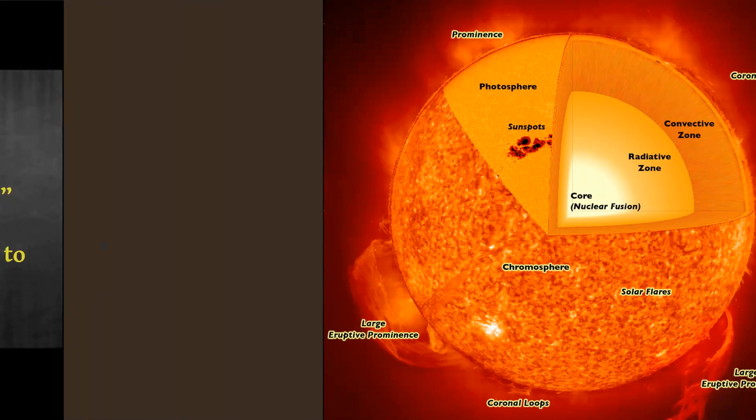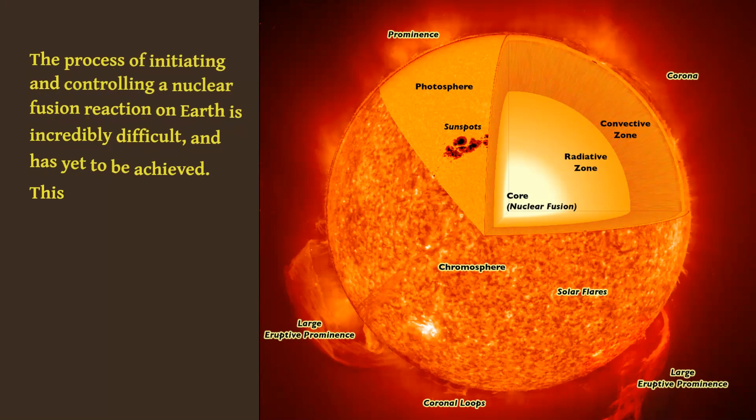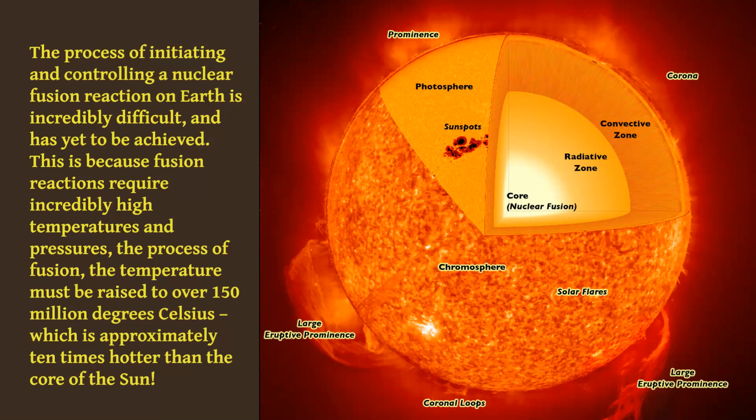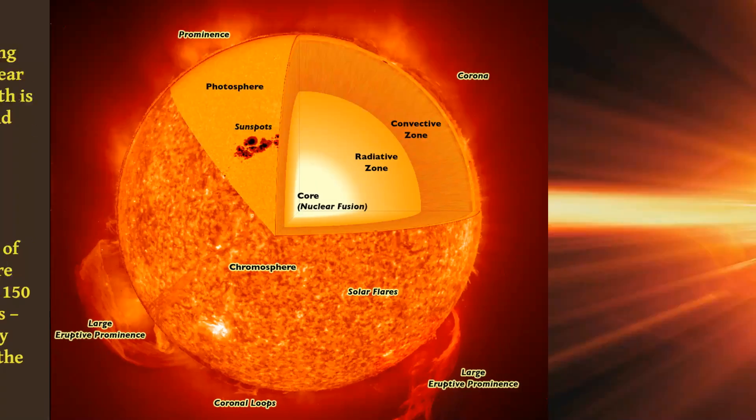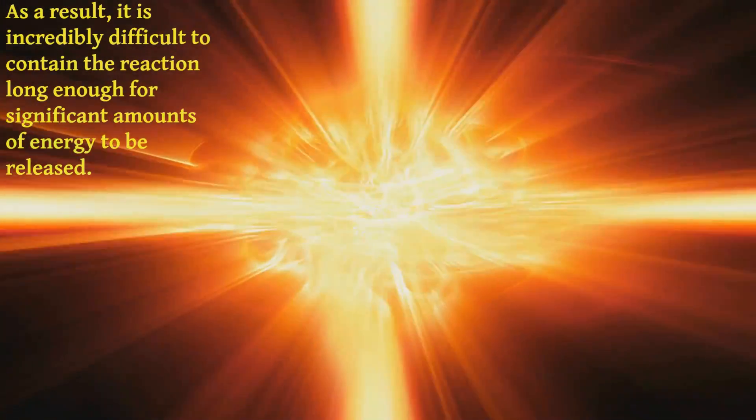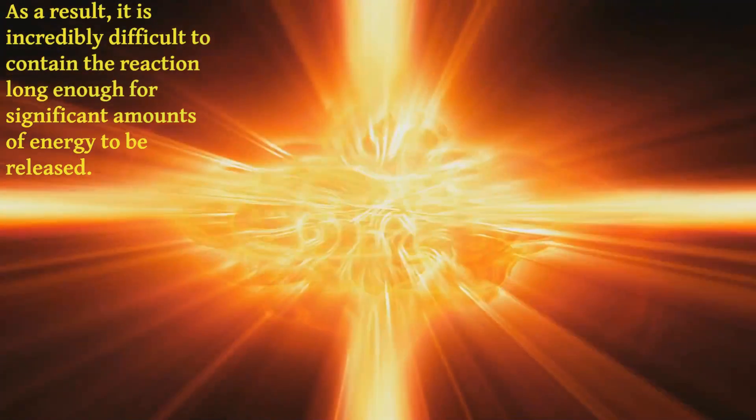The process of initiating and controlling a nuclear fusion reaction on Earth is incredibly difficult, and has yet to be achieved. This is because fusion reactions require incredibly high temperatures and pressures. The temperature must be raised to over 150 million degrees Celsius, which is approximately 10 times hotter than the core of the Sun. As a result, it is incredibly difficult to contain the reaction long enough for significant amounts of energy to be released.